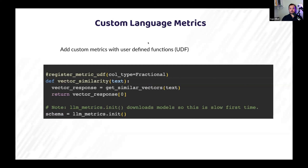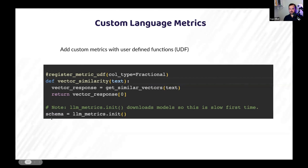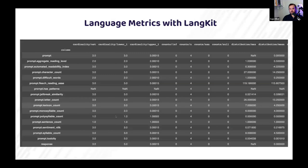For custom metrics, there are just a few more things to import, and then you just have a decorator around whatever function you want that brings in the prompt. In this example, I'm getting similar vectors from a vector database and returning the distance — that's a good way of looking at jailbreaks or any custom metrics. Once you have that decorator and function, you just redefine your schema by initializing the metrics again, and your new metric will be a column with the same distribution metrics being extracted.